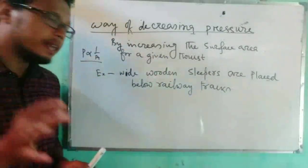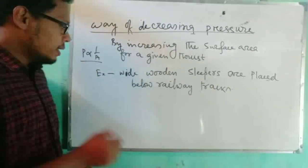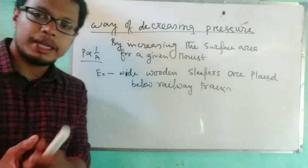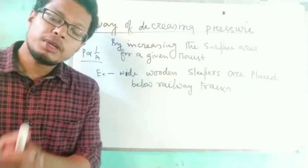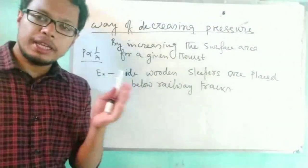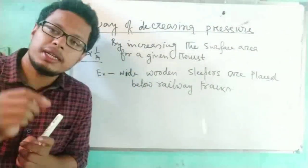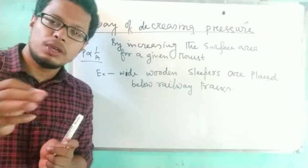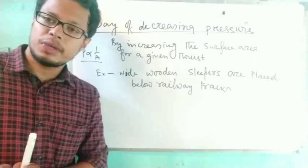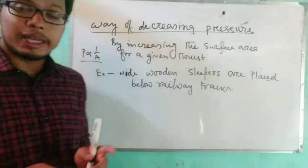One example: wide wooden sleepers are placed below railway tracks. When we place wooden sleepers, the area is more, and the pressure exerted by the iron rails on the ground becomes less.